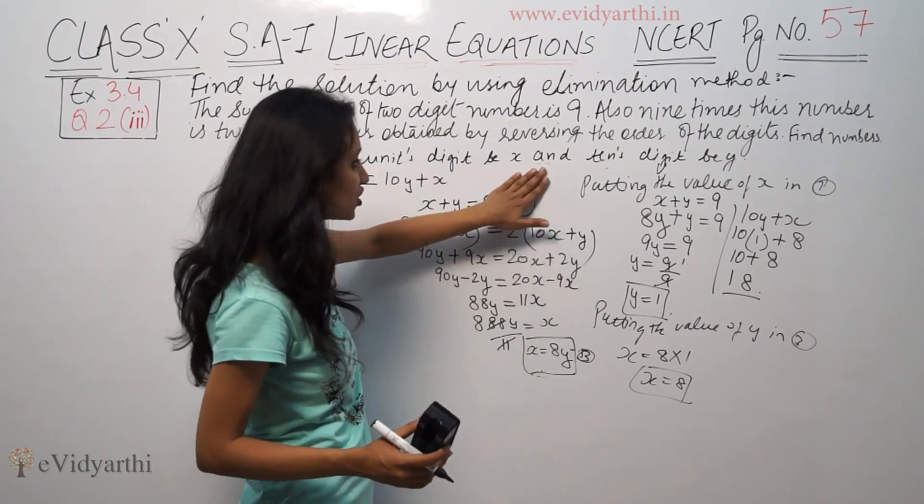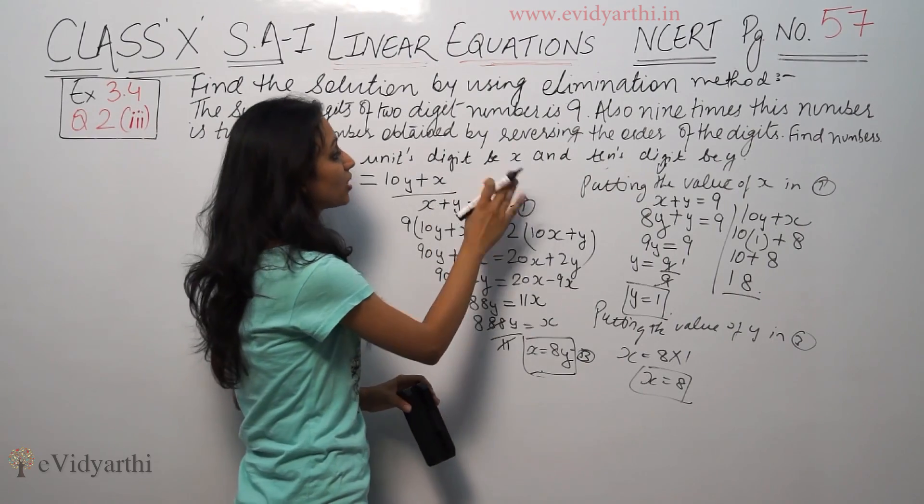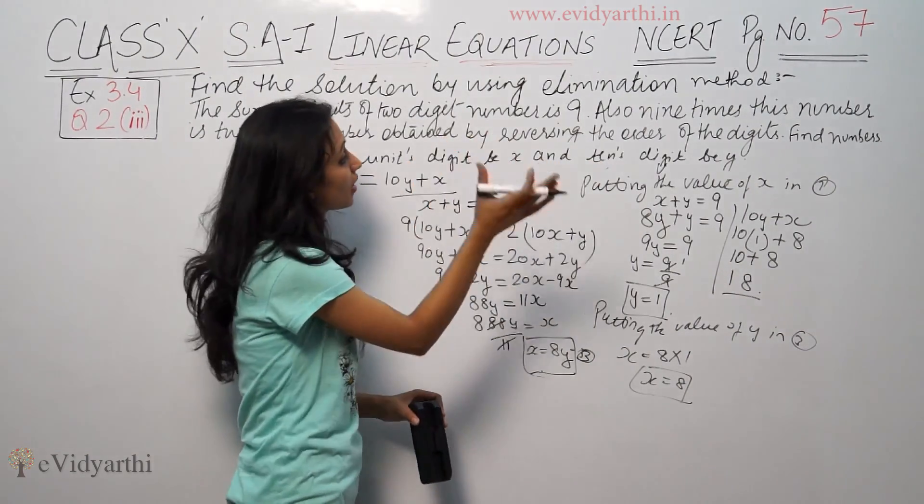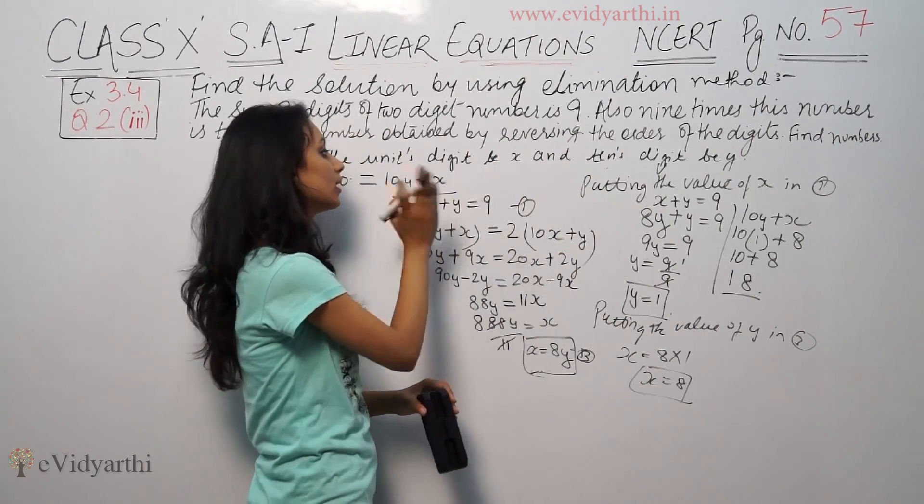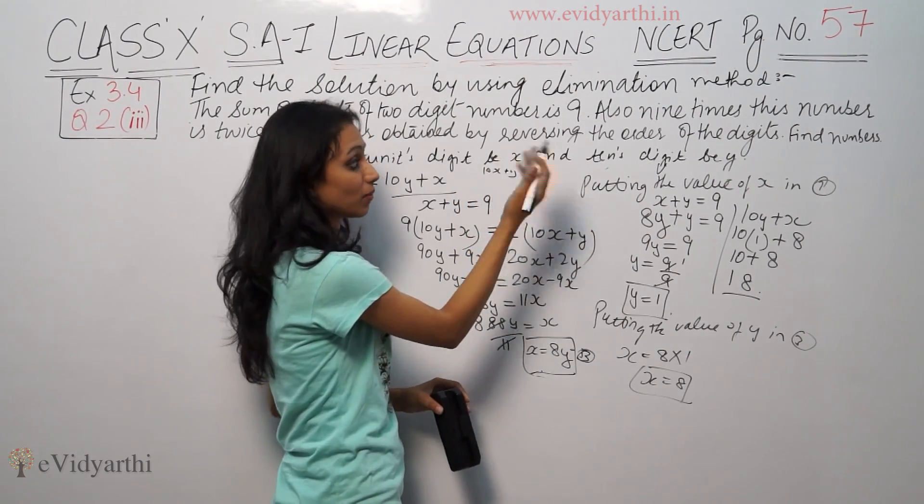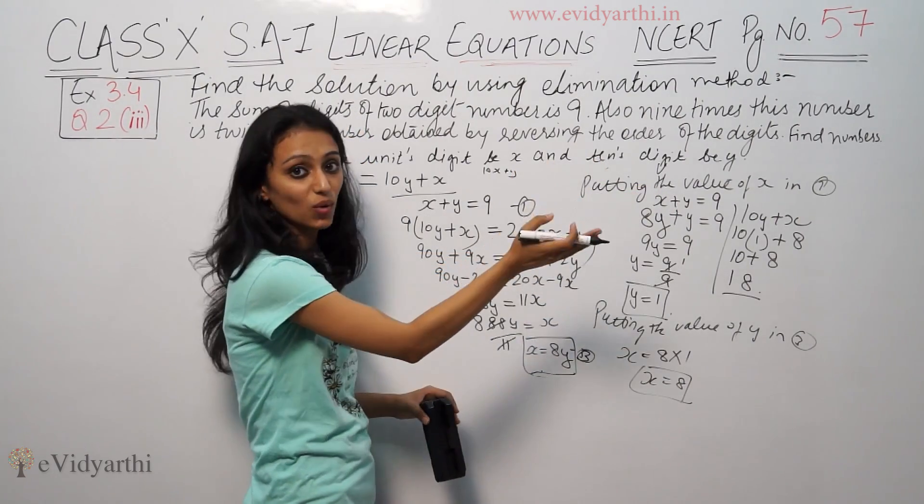First of all, you have to assume the digits. After you assume the numbers, if you take units as x and tens as y, then the number is 10y plus x. If you take units as y and tens as x, then the number is 10x plus y.